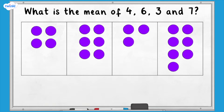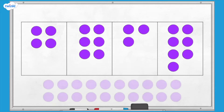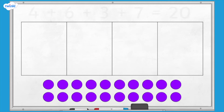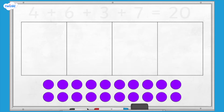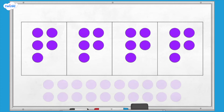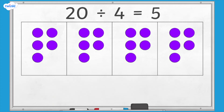First we add all the values together. 4 add 6 add 3 add 7 equals 20. Then we divide the total by the number of values we have, which is 4. 20 divided by 4 equals 5.